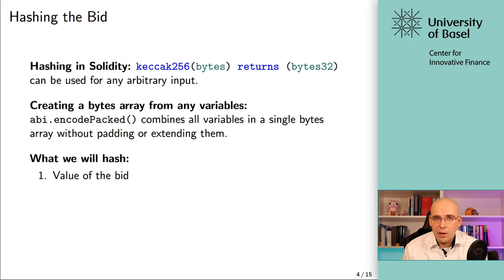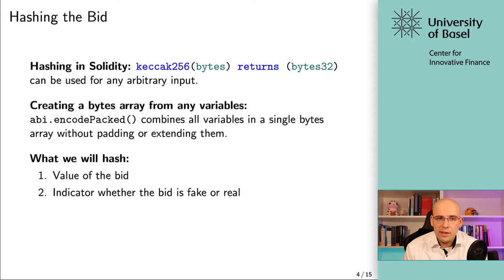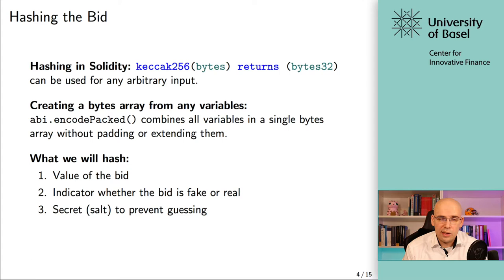What gets hashed? There are more parts than just the value of the bid. First, the value of the bid. Second, the indicator of whether the bid is fake or real, which also has to remain secret. Third, what you're also adding is the secret — also referred to as a salt — and this is super important. This is just some random information you put in there that prevents other people from guessing the values you've set. You just need some entropy here, and this entropy prevents them from guessing.